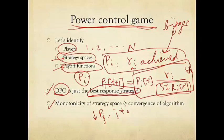Now this is obvious once I state it, right? Because if you reduce your transmit power, I have less interference, so I have more choices of P - smaller values of P that can still give me my target gamma. And this is what I mean by monotonicity of the strategy space.